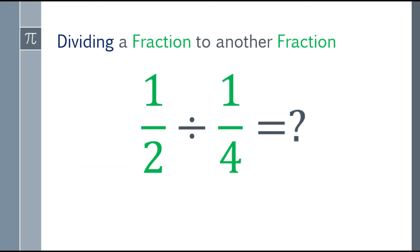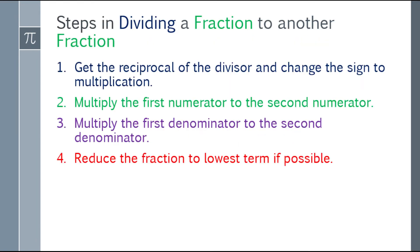So if we have an example like this one — one-half divide by one-fourth — what are the steps we're going to do to divide fractions? When dividing a fraction by another fraction, we have four steps. The first one is: get the reciprocal of the divisor and change the sign to multiplication. Second, multiply the first numerator by the second numerator. Third, multiply the first denominator by the second denominator. And lastly, reduce the fraction to lowest term, if possible.